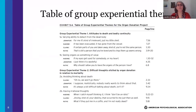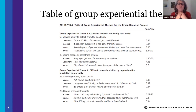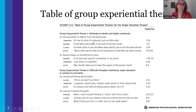This shows an example of a table of group experiential themes, taken from a study on organ donation we conducted a few years ago. We have a higher-level theme broken down into two lower-level themes - in this case, attitude to death and bodily continuity, which encompasses the varying ability to detach from the dead body and seeing organs as something of value. Within those sub-themes, the participants for whom that sub-theme was relevant are represented through their words - verbatim quotes from participants.